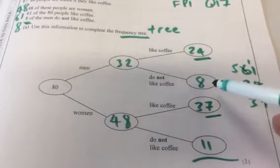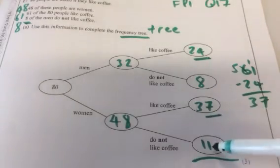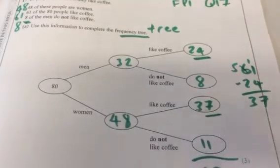And just to check, 24 plus 8 is 32, 62, 69, 70, 80. So we get 80, the total there.